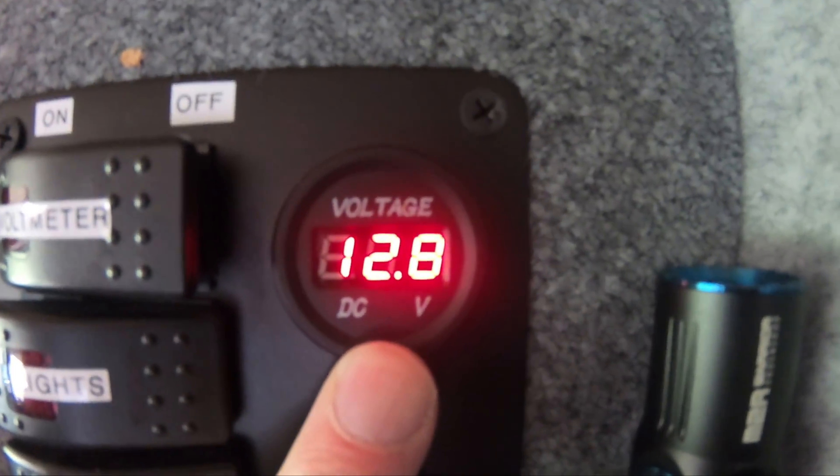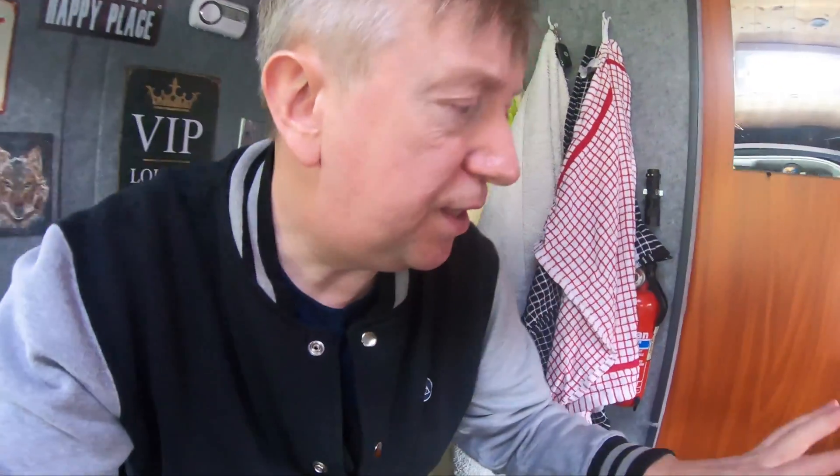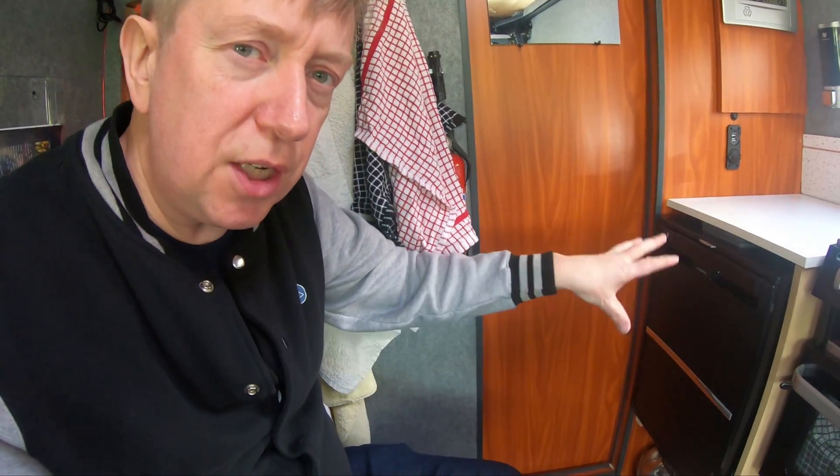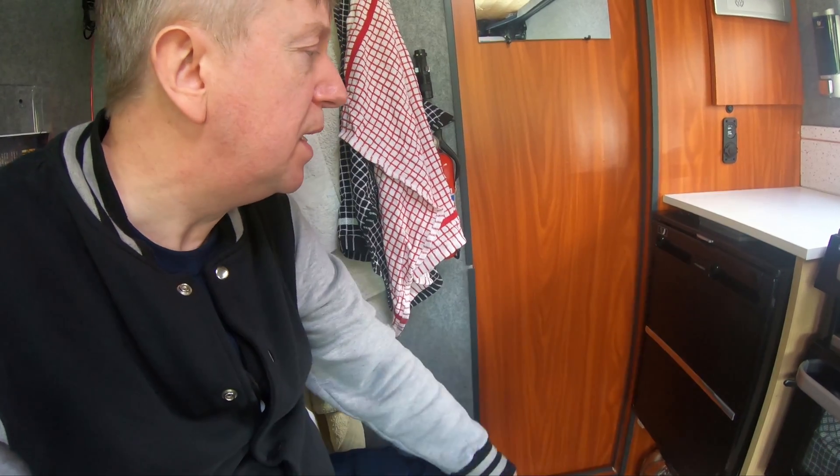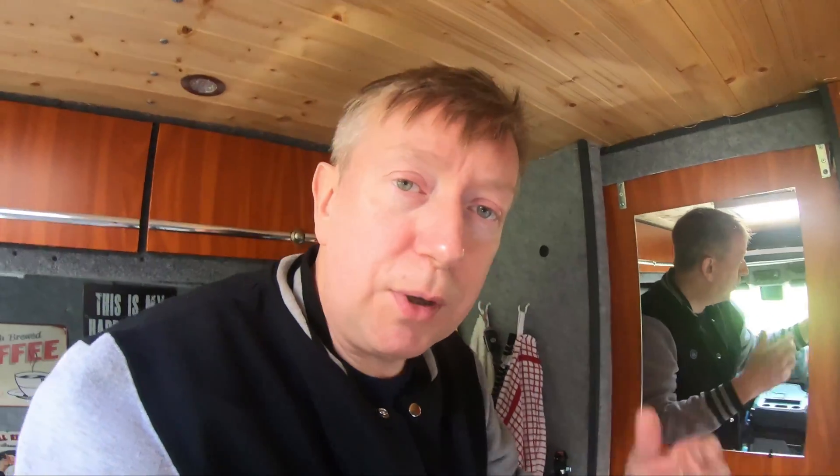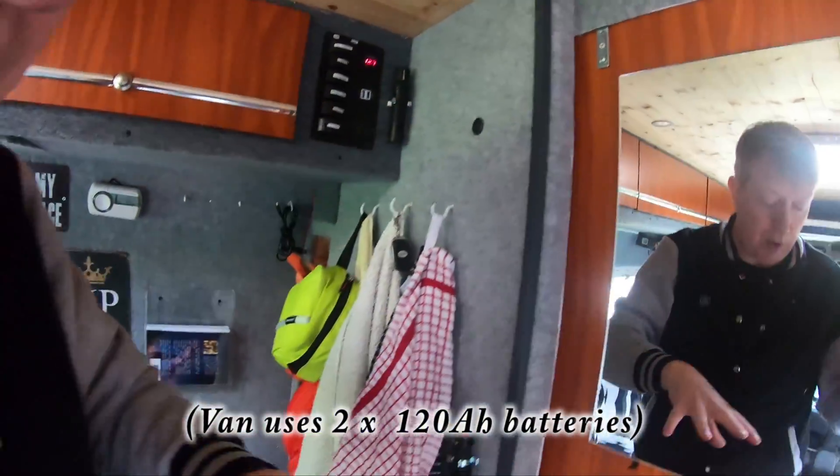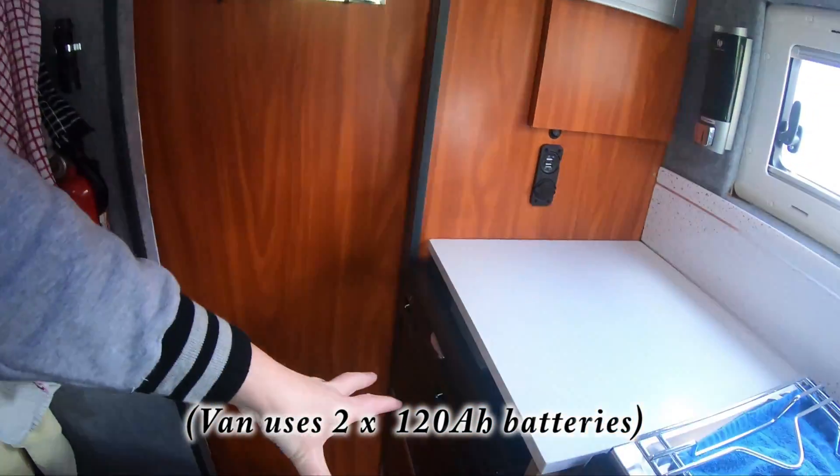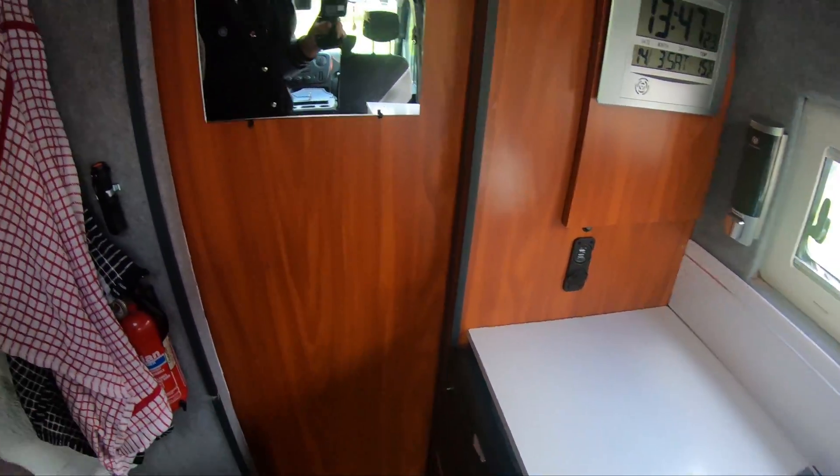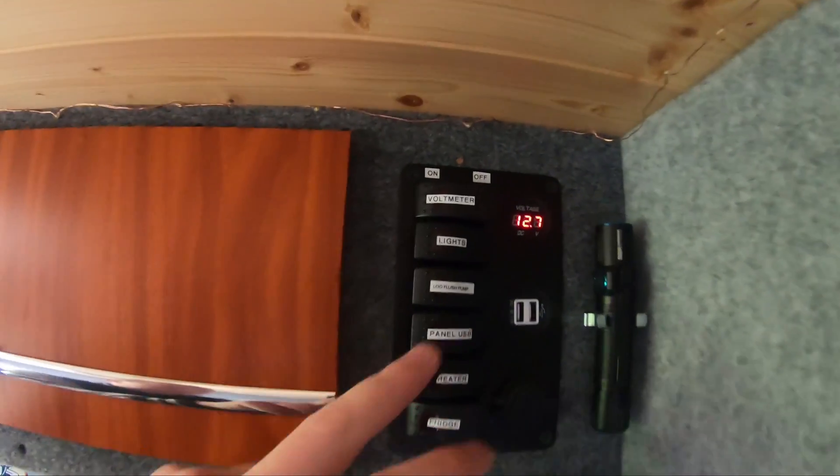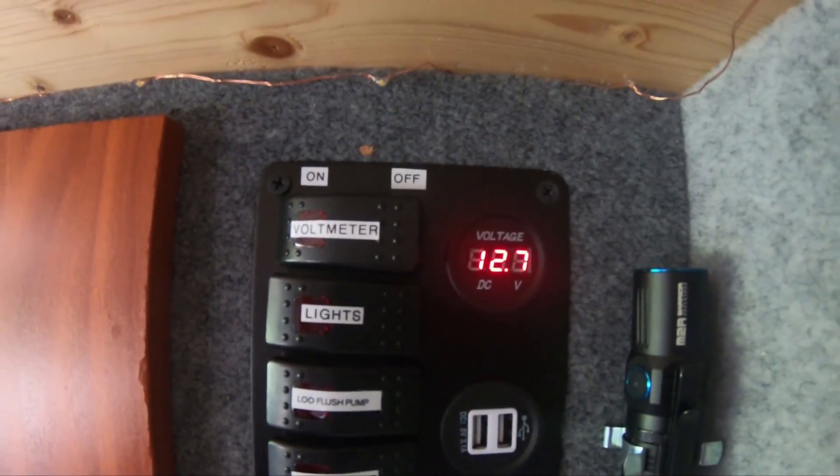Hopefully you can see that okay. With the freezer setting on this, I'm going to assume that the compressor is going to be going most of the time. During the daytime, we've got the solar panels on the roof running everything. Overnight, it's going to be interesting to see whether or not this retains its power and keeps going. We've just dropped down to 12.7 volts now.